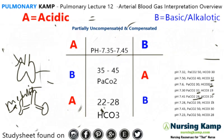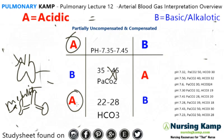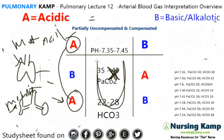Next: pH of 7.28 — right on the outside. We have a PaCO2 of 39 in the middle, and a bicarb of 18. We connect these two together: we have an acidosis in the metabolic area. Because we connected with PaCO2 in the middle, it is uncompensated metabolic acidosis.